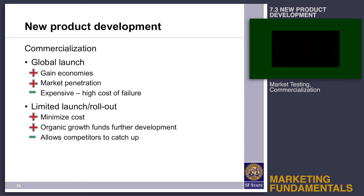Once the product has been tested and is ready, you need to take it to market. There are two main approaches. The first is a global launch, where you introduce the product to all of your markets simultaneously. This works well for mass market goods or where you're looking for a pioneering effect — you want to hit the market first. The disadvantage is that it's very expensive, and if the product fails it's a very expensive failure.